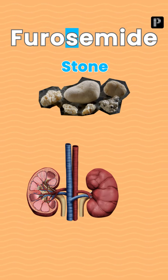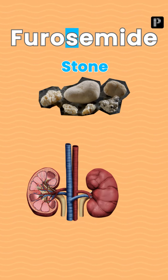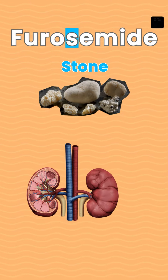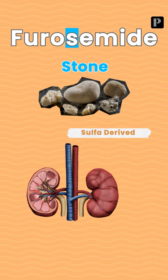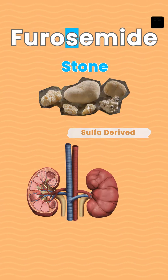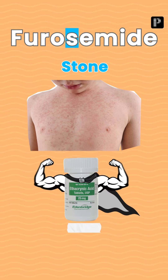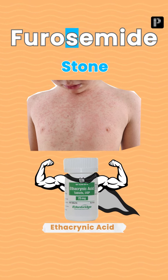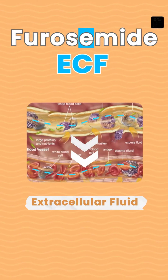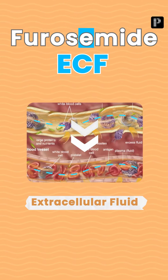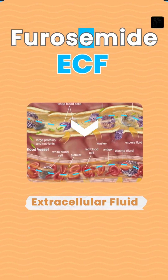S stands for stones — why stones? Because loop diuretics lose calcium, so there is a risk of calcium stones. Also, these loop diuretics are sulfa-derived, so there is a risk of allergy, except for the drug ethacrynic acid.